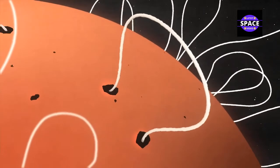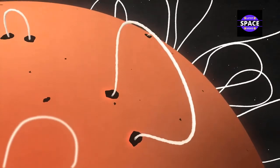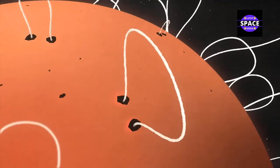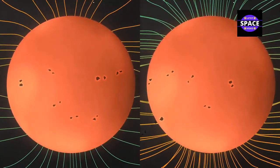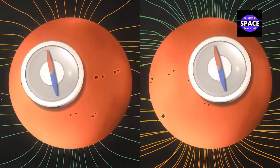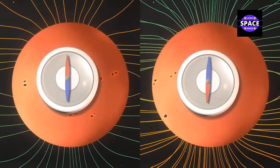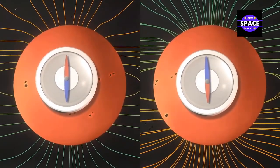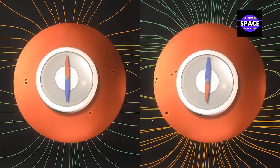As the solar cycle unfolds, more sunspots appear and the magnetic field becomes more tangled. At the peak of the solar cycle, the Sun's magnetic field flips. The North Pole switches to the south and vice versa. The cycle then ramps down, ready to start a new cycle.